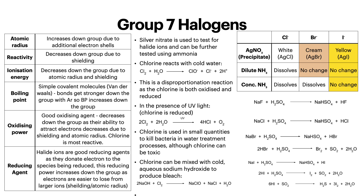Chlorine reacts with cold water in a disproportionation reaction, as the chlorine is both oxidized and reduced. Then in the presence of UV light, chlorine is reduced. Chlorine is used in small quantities to kill bacteria in water treatment processes, although chlorine can be toxic, hence why it's only used in very small quantities — for example in swimming pools. Chlorine can also be mixed with cold aqueous sodium hydroxide to produce bleach. So chlorine is a very useful halogen.